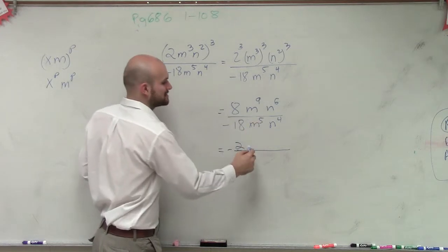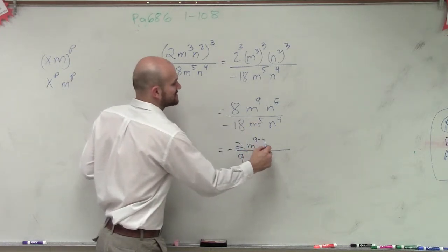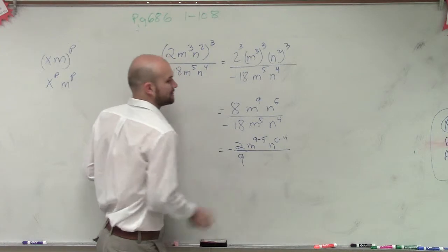Therefore, remember, when we divide, we subtract. So it's m to the 9 minus 5, and n to the 6 minus 4.